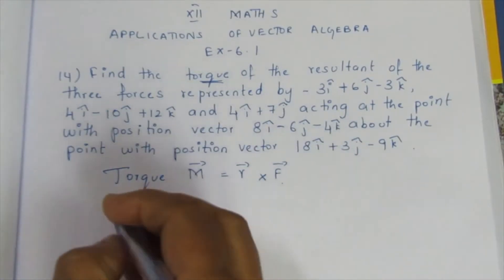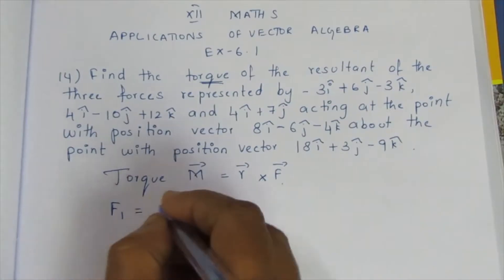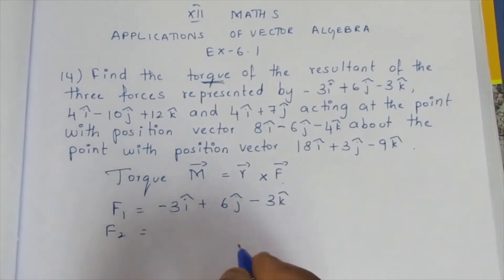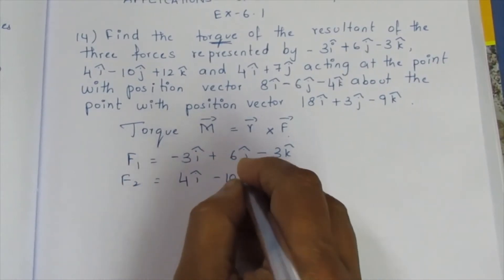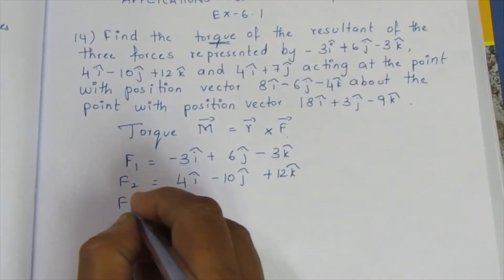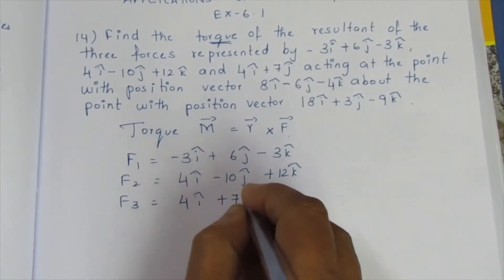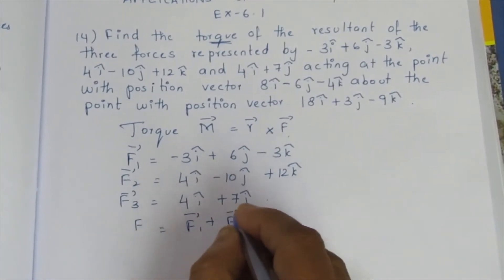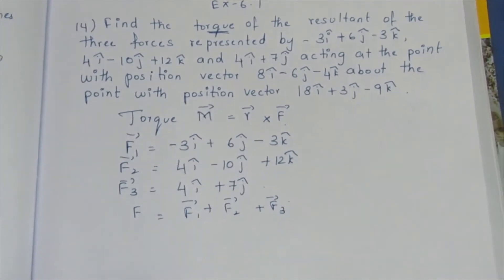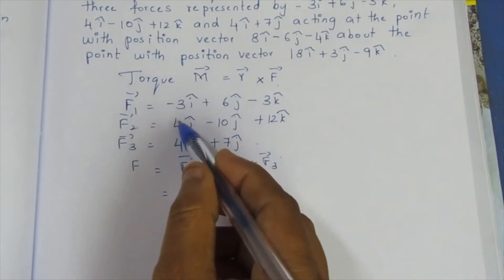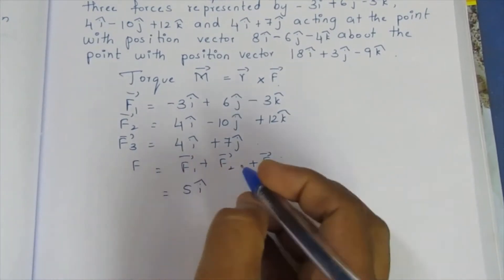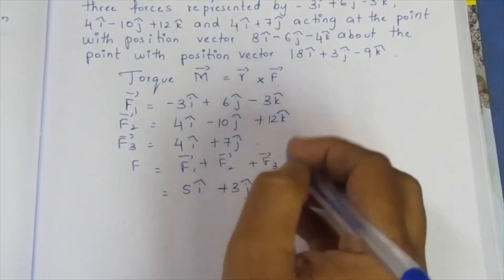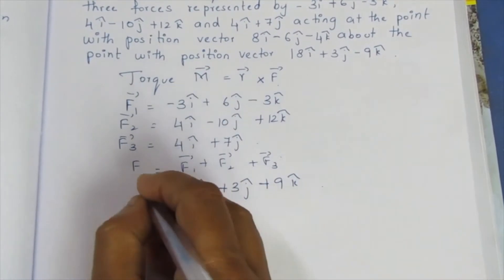We have three forces, so we find the resultant force. F1 is minus 3i-cap plus 6j-cap minus 3k-cap. We add F1, F2, and F3 together. F is 4 and 8, so this gives us 5i-cap. This is minus 3 plus 3 j-cap, and this is plus 9k-cap. So this is the F-vector resultant.